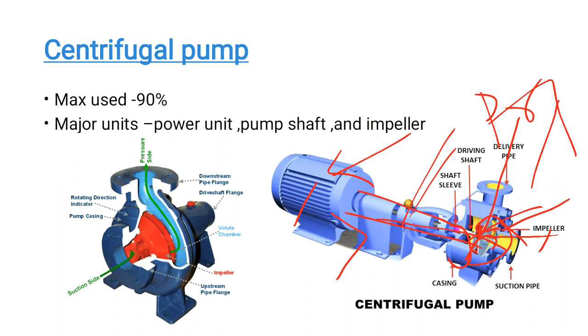There are two types of centrifugal pumps: the diffuser type and the volute type. Both serve the same function but differ mainly in their design.